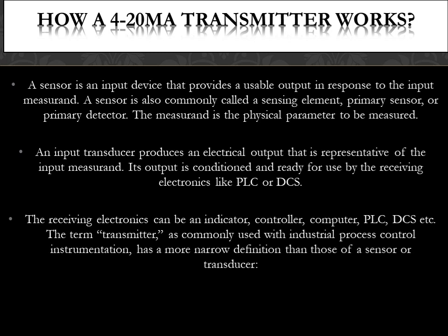The transducer output is conditioned and ready for use by the receiving electronics like PLC or DCS. The receiving electronics can be an indicator, controller, computer, PLC, DCS, etc. The term transmitter, as commonly used with industrial process control instrumentation, has a more narrow definition than those of a sensor or transducer.